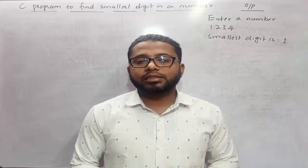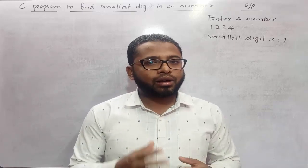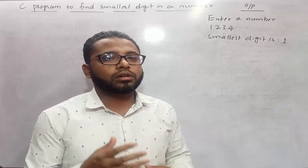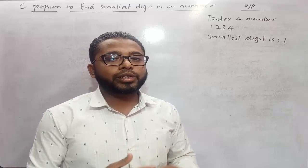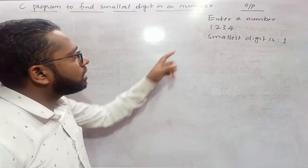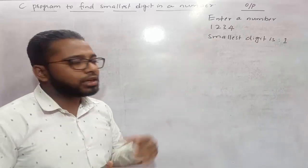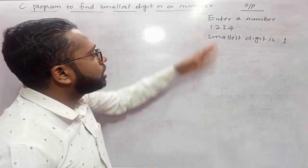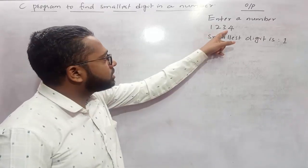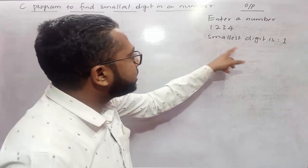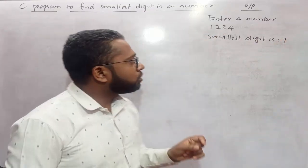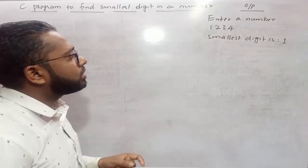Now let us start our discussion. Here I have already written down the output of this program. When the program gets executed it first asks the user to enter a number. Let's say the user enters 1234. Our program needs to find the smallest digit from this number and print it out. The smallest digit is 1.